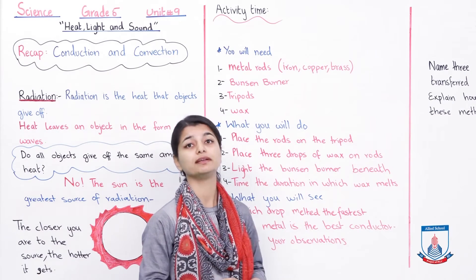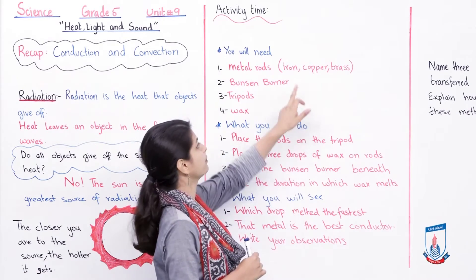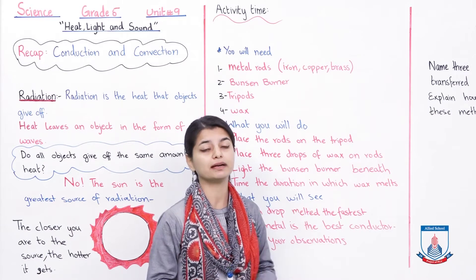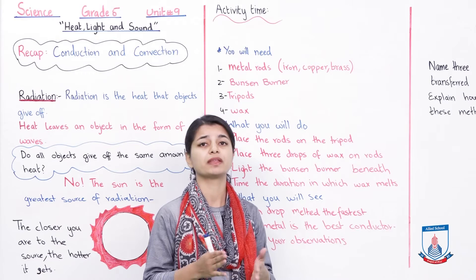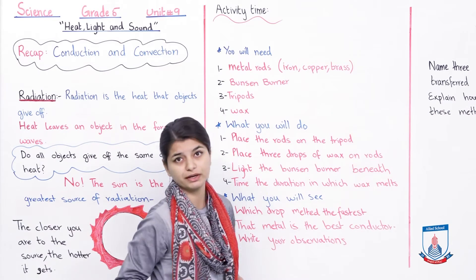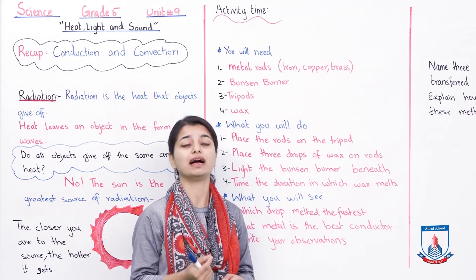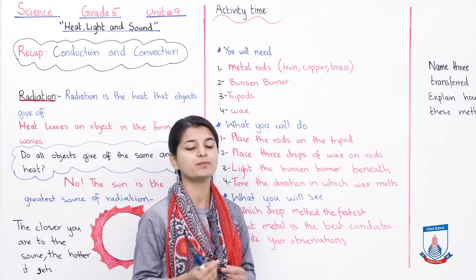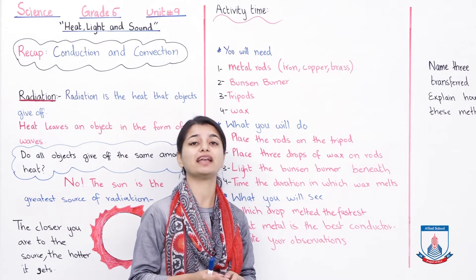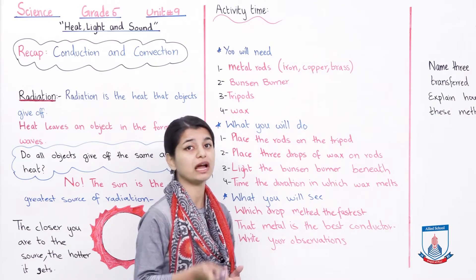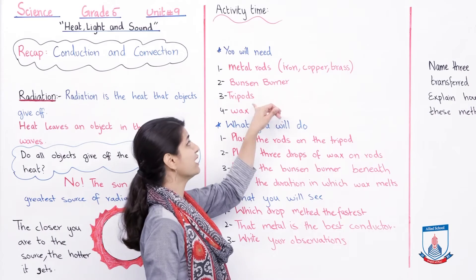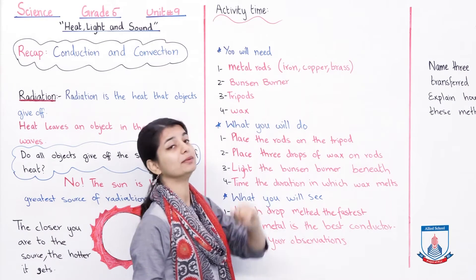What do you need? Metal rods — iron, steel, or any kind of rods. You will need a bunson burner, which is a laboratory item like a small stove used as a heat source. You need a tripod — a stand, similar to camera tripods. You need metal rods, a bunson burner, a tripod, and wax — wax is like the material you see in candles.